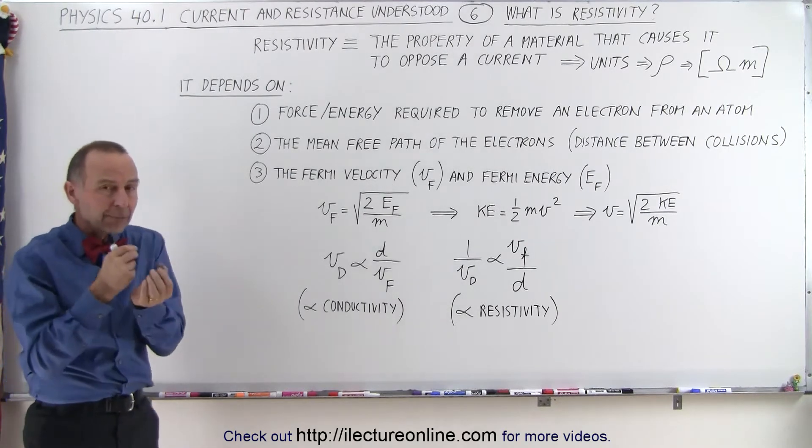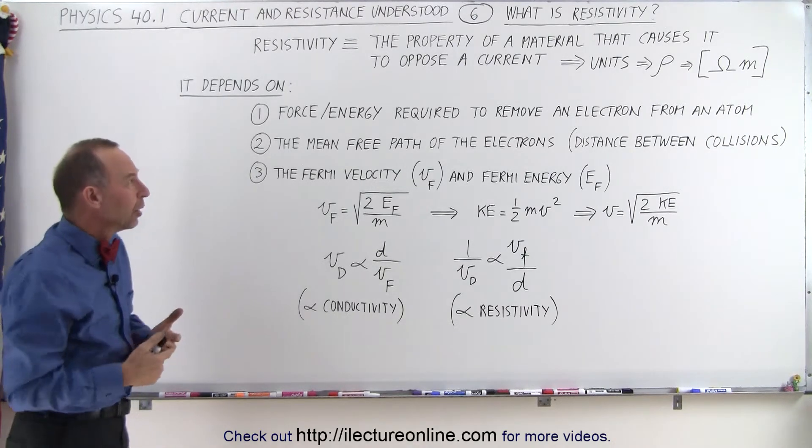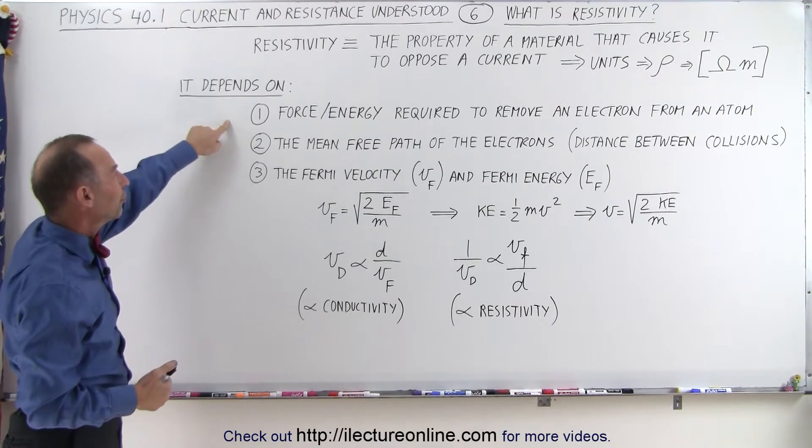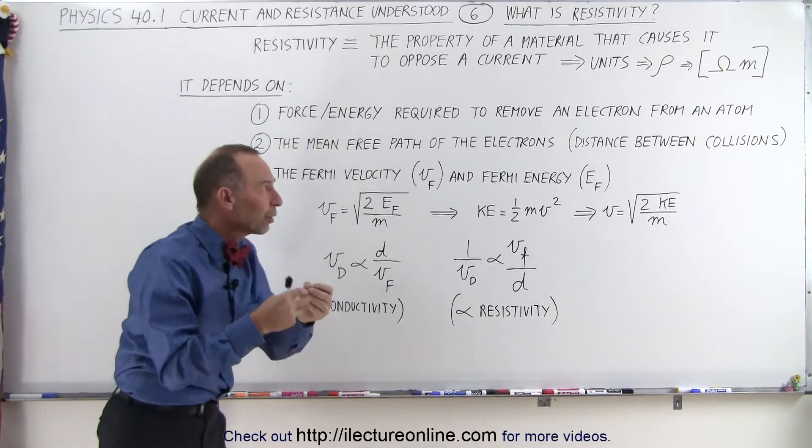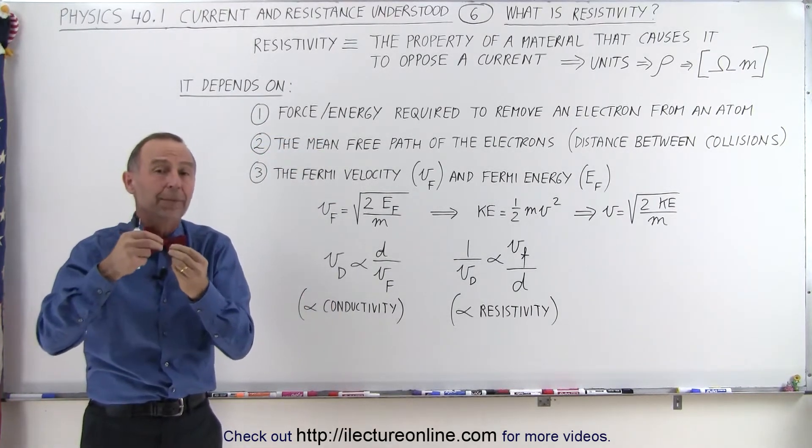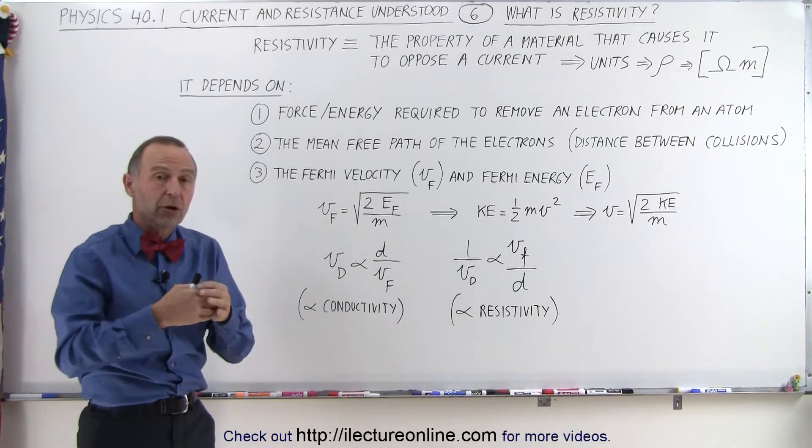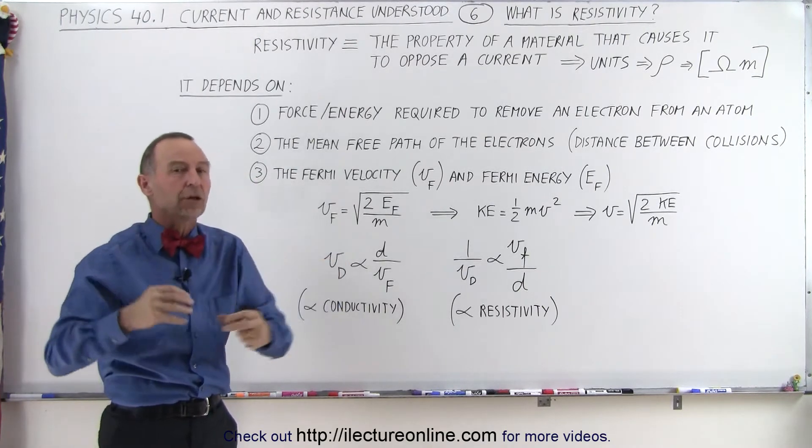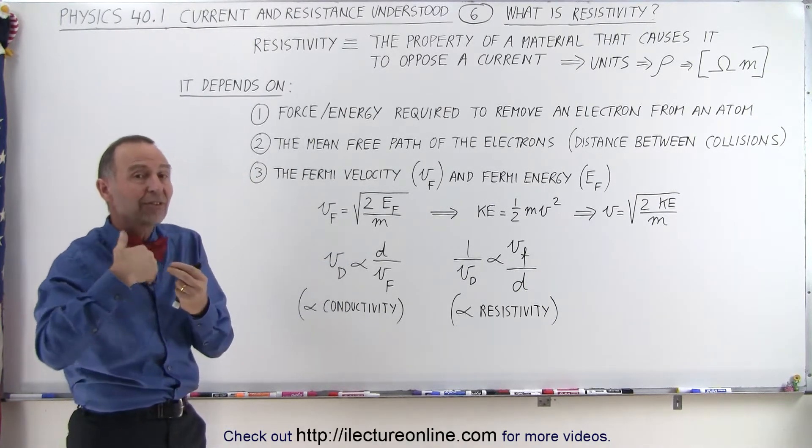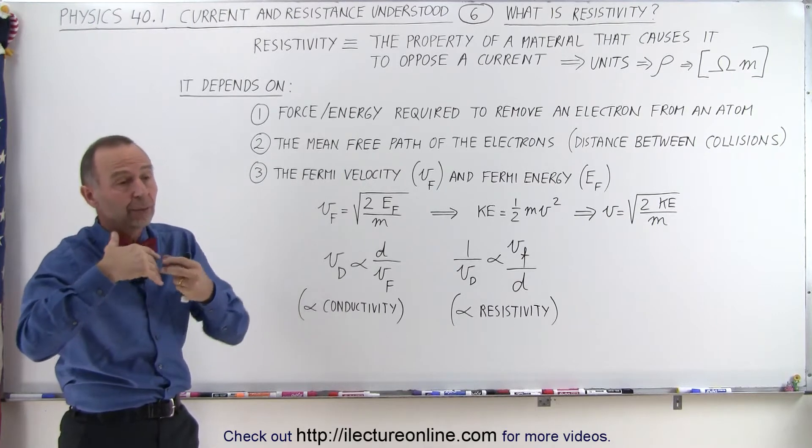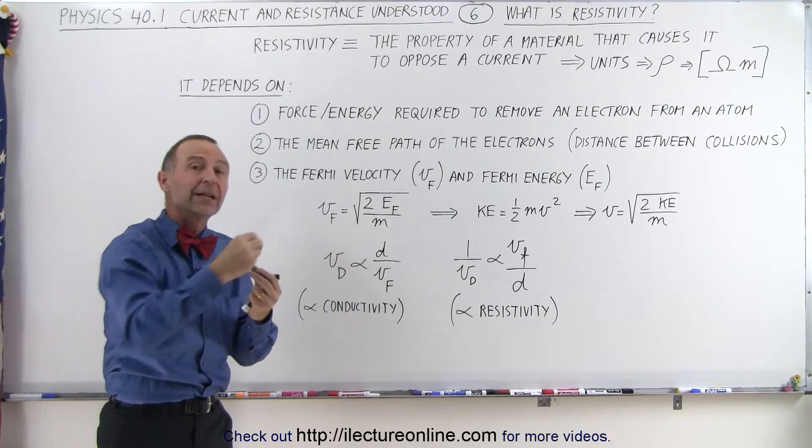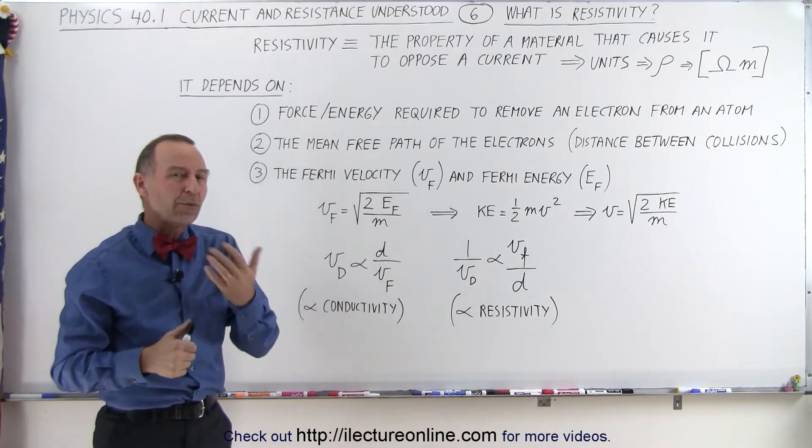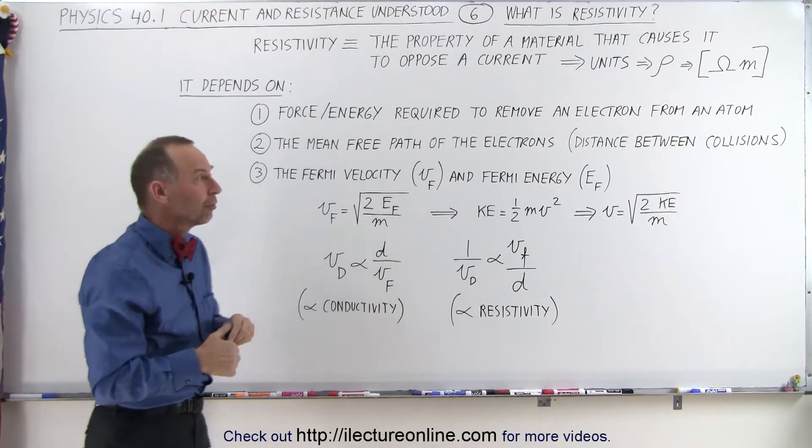But the resistivity, that property in a material that opposes the flow of charges, depends on three main things. First of all, it depends on the force or the energy required to remove an electron from an atom. After all, for charges to flow, you have to have free charges and you have to be able to rip them away from the atoms inside the conductor material. So how much energy and force that requires? Well, the more force it requires, the harder it is to free an electron in order to make it move through the circuit, the more energy it takes. So that would be one way that it could oppose the flow of charges.